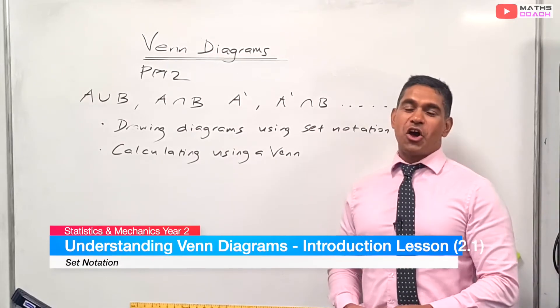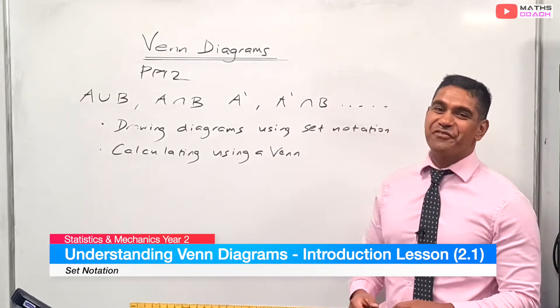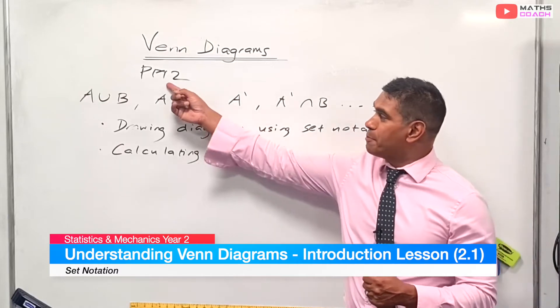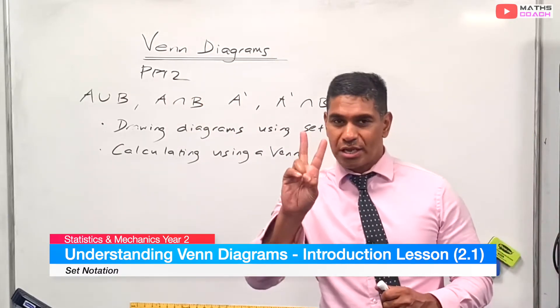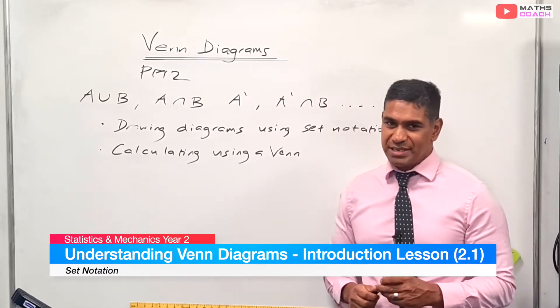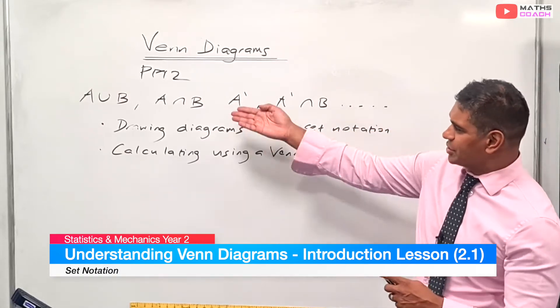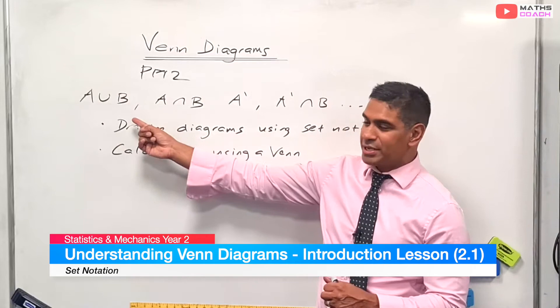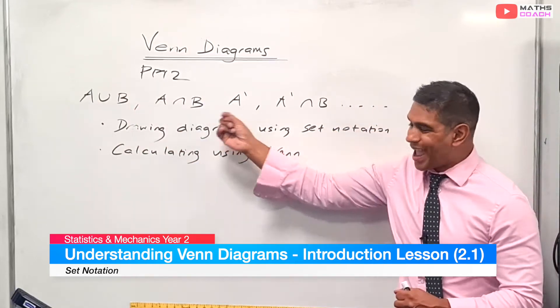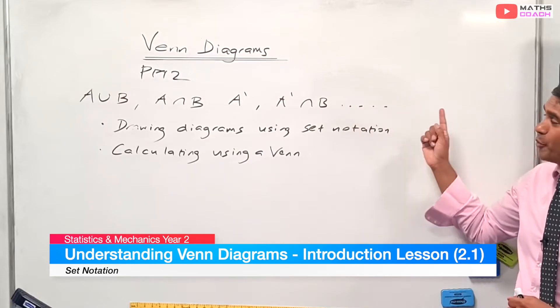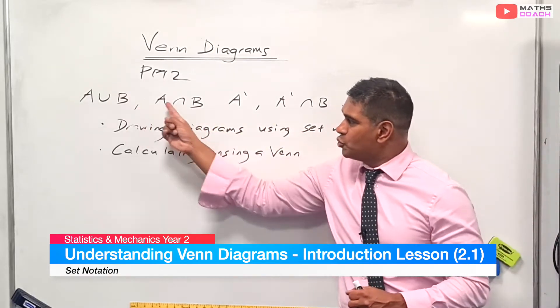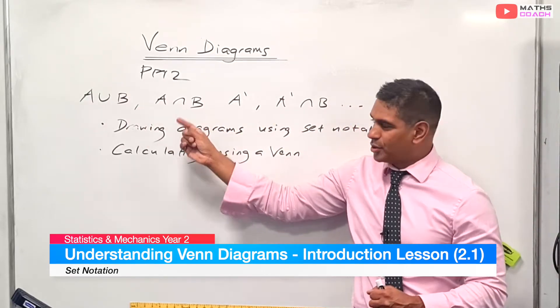Hi guys, we're going to do a session on Venn diagrams today, a Year 13 topic used in PM2. Now you would have covered Venn diagrams two years ago in Year 11 in GCSE, but what we're going to do today, as you can see from the board, we're going to look at set notation. We've got A∪B, we've got A∩B, A', A'∩B, and it will go on with a combination of ∪ and ∩.